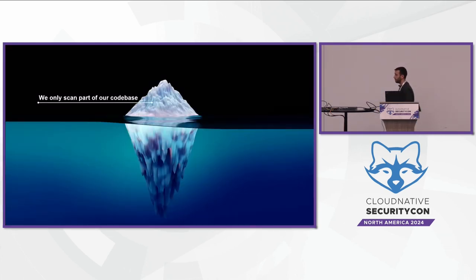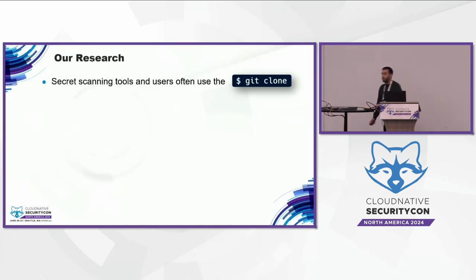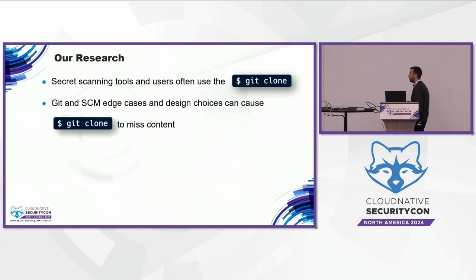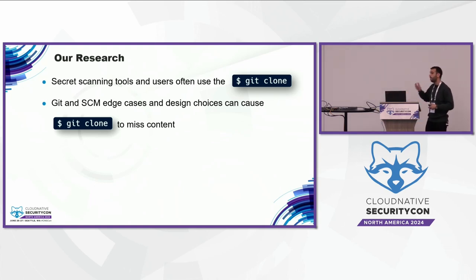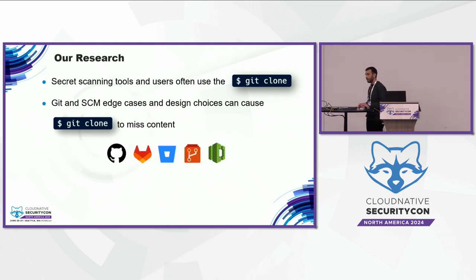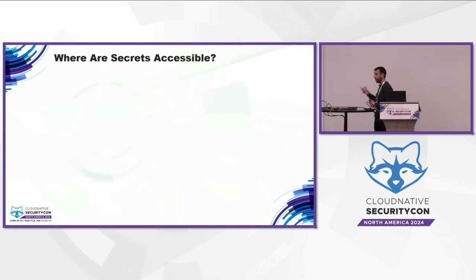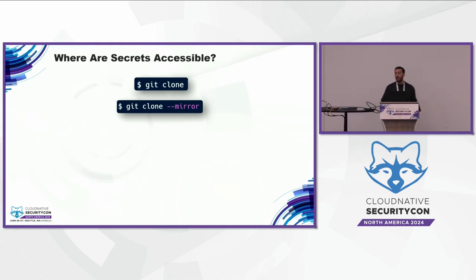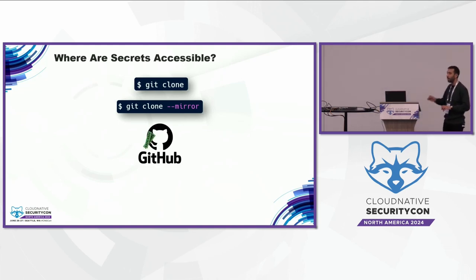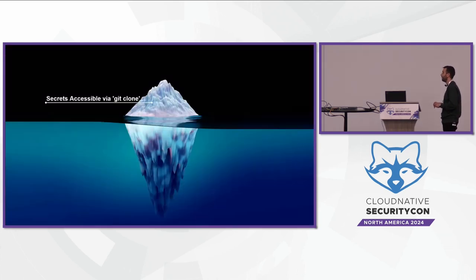We will categorize secrets into three different categories. First, secrets accessible via git clone. Second, secrets accessible only via git clone --mirror. Third, secrets accessible only via what's called a cache view in our SCM platform, in this case GitHub. We'll mainly speak about GitHub as it's the most popular, but some findings apply to other source code management systems as well.